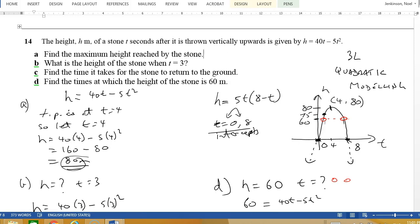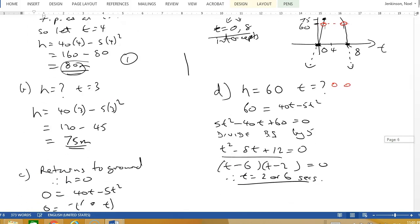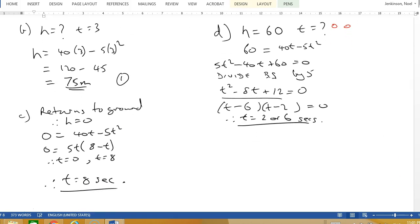How would we mark that question? There would be one mark for finding maximum height reached by the stone, being 80. One mark for the height at t=3. For returns to the ground there would be two marks: one for turning it into an equation and one for finding that it's 8.